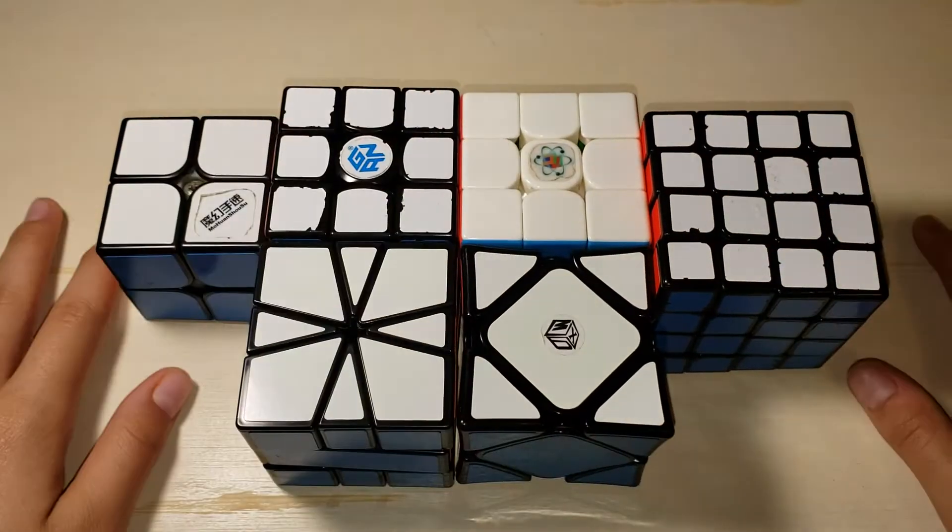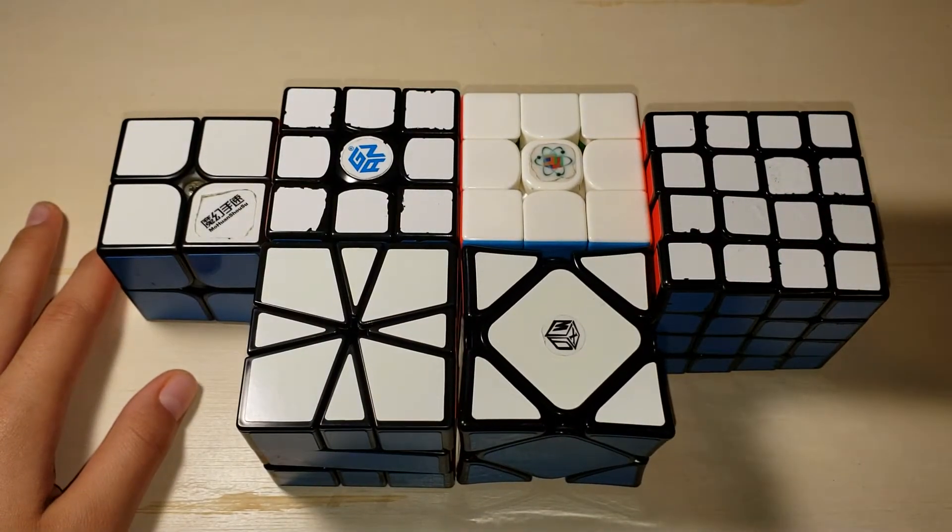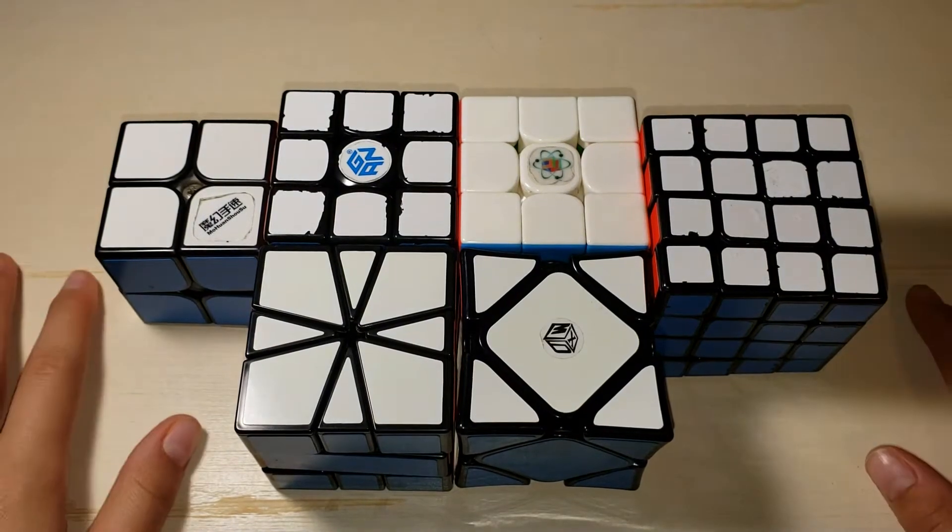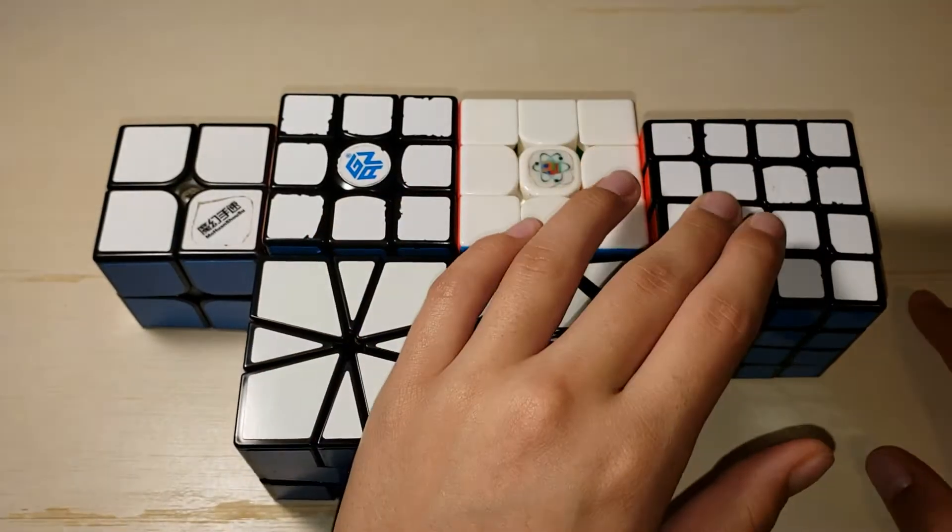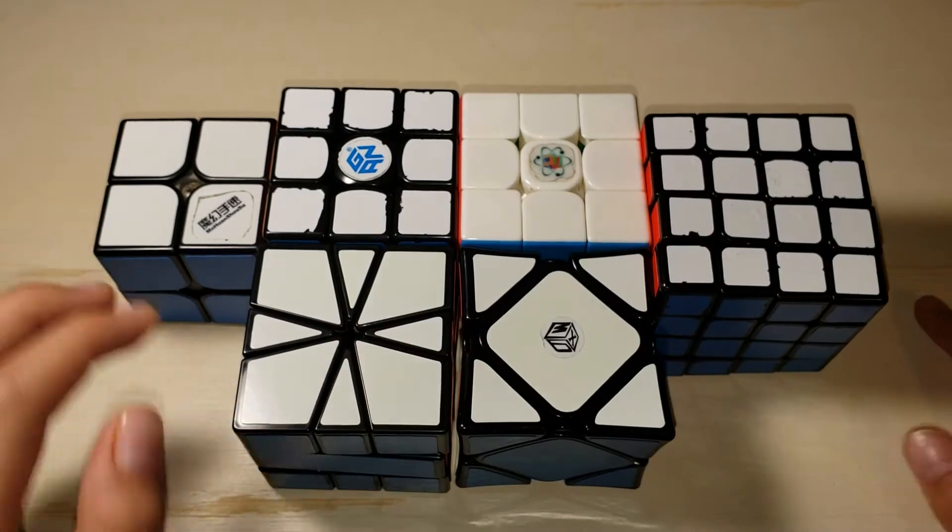Hey guys, and today I'm going to do my main singles for Bayou Bash 2018. So, I'm competing in 6 events: 2x2, 3x3, 3x3 one-handed, 4x4, square one, and skew. Let's get started.